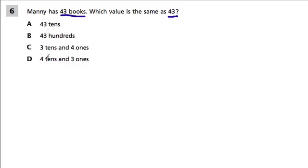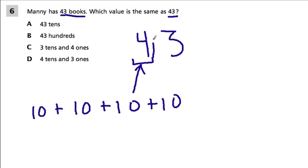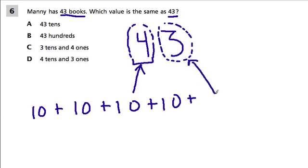Which of these is the same as having 43 books? Let's look at the number 43. The 4 means you have four tens — 10, 10, 10, and 10. This place value tells us we have four tens, and then this number tells us we have three ones: one, one, one. That's the number 43.